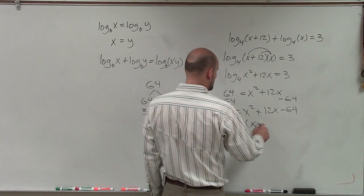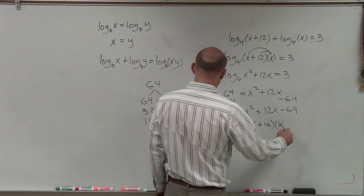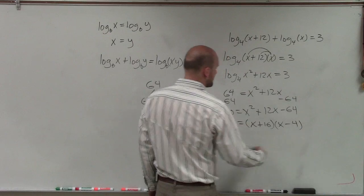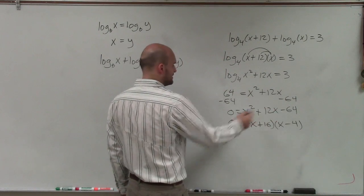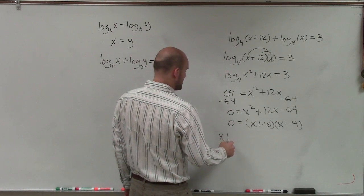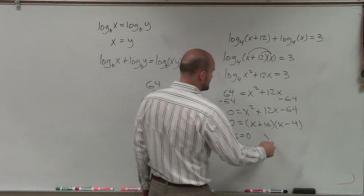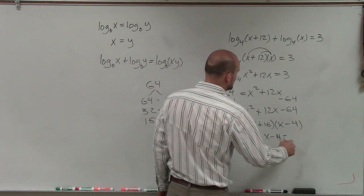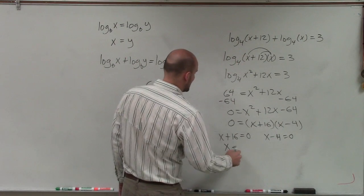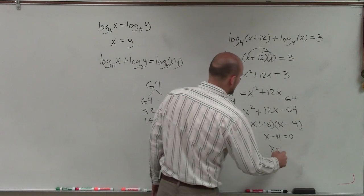We can write this as (x + 16)(x - 4). Now, apply the zero product property: x + 16 = 0 and x - 4 = 0. Solving, we get x = -16 and x = 4.